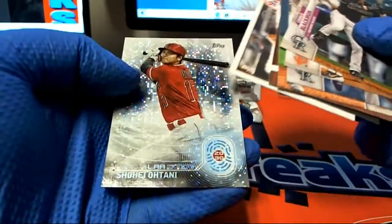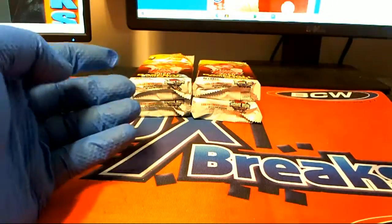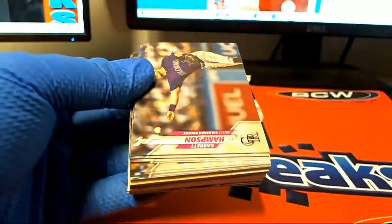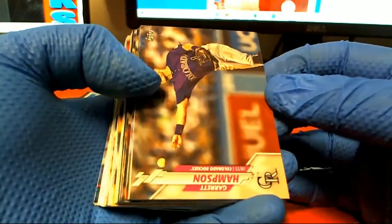Chris Shaw. Rendon right there. Domingo. Garrett Cole and Ohtani. Nice Hampson.